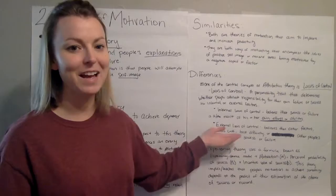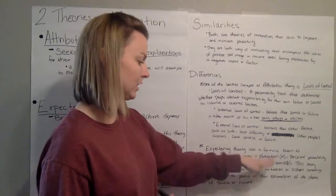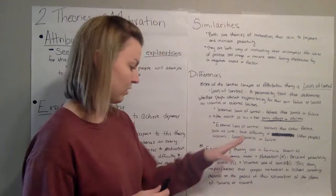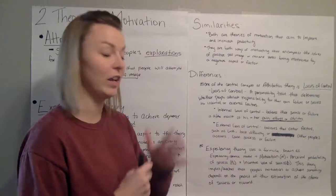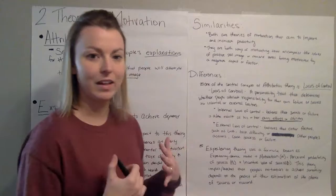And so other than those factors in the attribution theory, we look at the expectancy theory, which uses a formula known as the expectancy balance model. So you've got motivation equals the perceived probability of success times the incentive value of that success. And so what this theory is teaching is that people's motivation to achieve something depends on the product of their estimation of the chance of success or reward. So their motivation level depends on what they think they're going to get out of it, that expectation of reward.